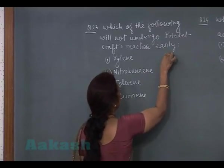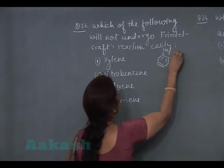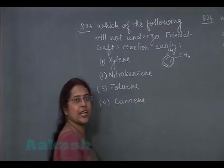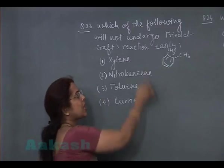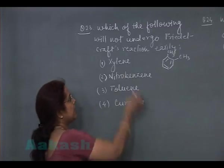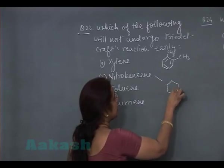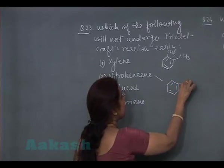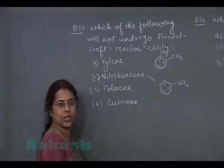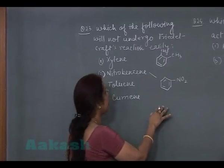Friedel-Craft reaction is alkylation of aromatic ring, that is electrophilic substitution reaction. Now first option is xylene. Xylene is the compound in which two methyl groups are attached to the benzene ring. And methyl group is ring activating group. So this compound can undergo electrophilic substitution reaction easily. The second option is nitrobenzene. If nitro group is attached to the benzene ring, being a ring deactivating group, the electrophilic substitution reaction becomes quite difficult.